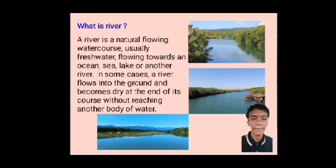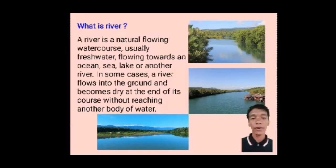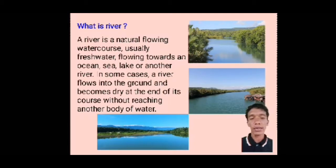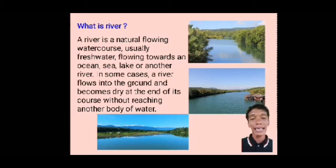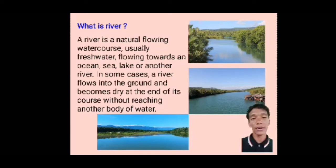What is a river? A river is a naturally flowing water course, usually freshwater, flowing towards the ocean, sea, lake, or another river. In some cases, a river flows underground and becomes dry at the end of its course without reaching another body of water.